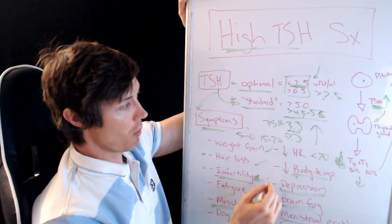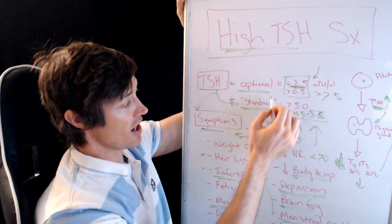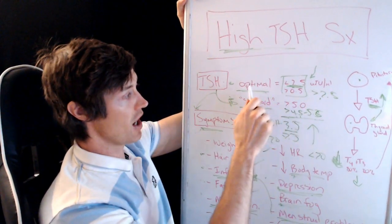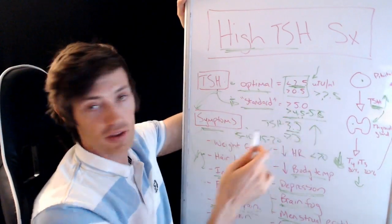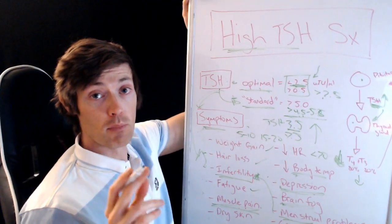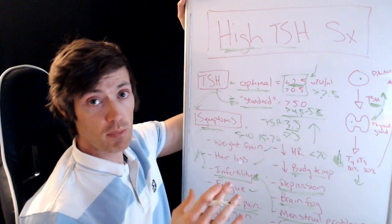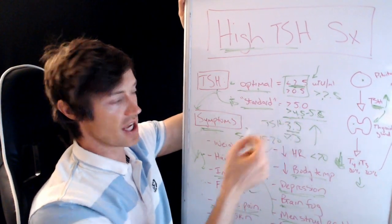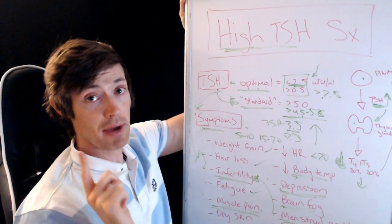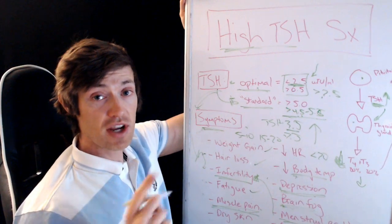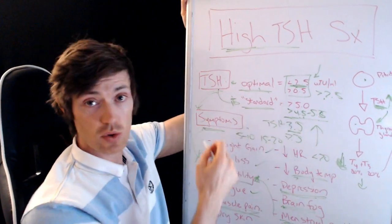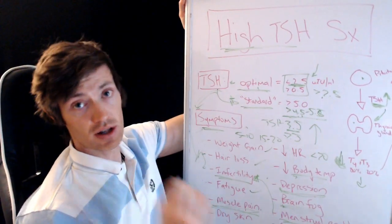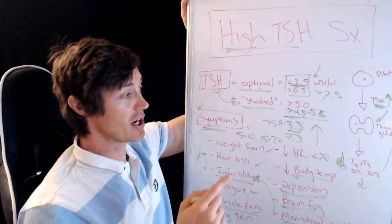If you understand these symptoms and the difference between optimal and standard TSH levels, you can figure out what's really happening. You need this basic understanding and to compare your symptoms to your TSH level. Leave a comment below telling me what your TSH is — I'm really interested, and tell me whether you're in the optimal or standard range. Make sure to download my free thyroid resources: I have eight free resources covering foods to avoid with thyroid problems, a complete hypothyroid symptoms checklist, how to look for optimal labs, and much more. I'll see you guys in the next one.